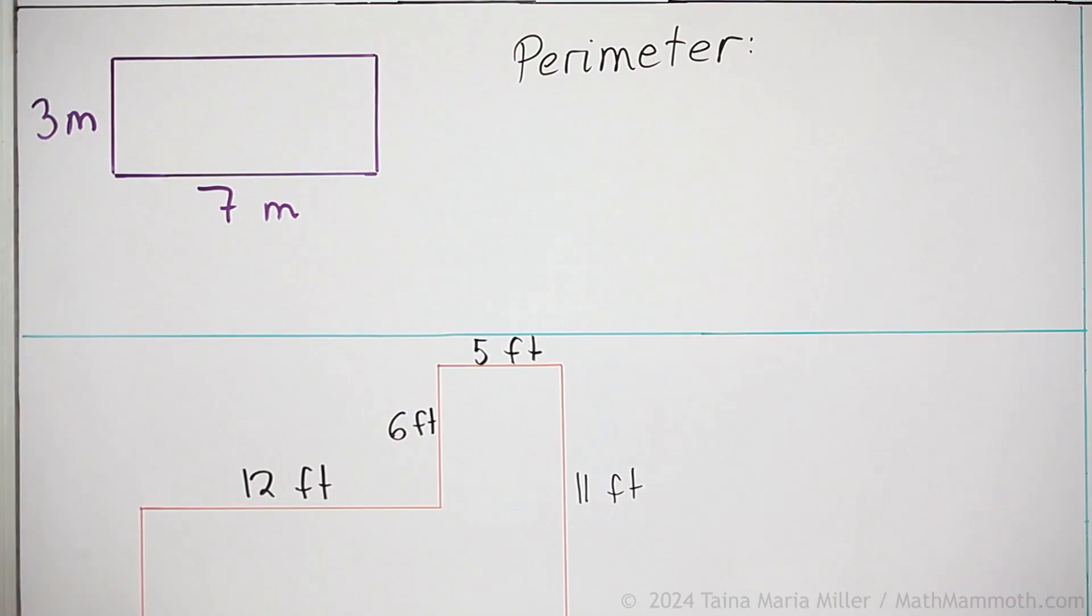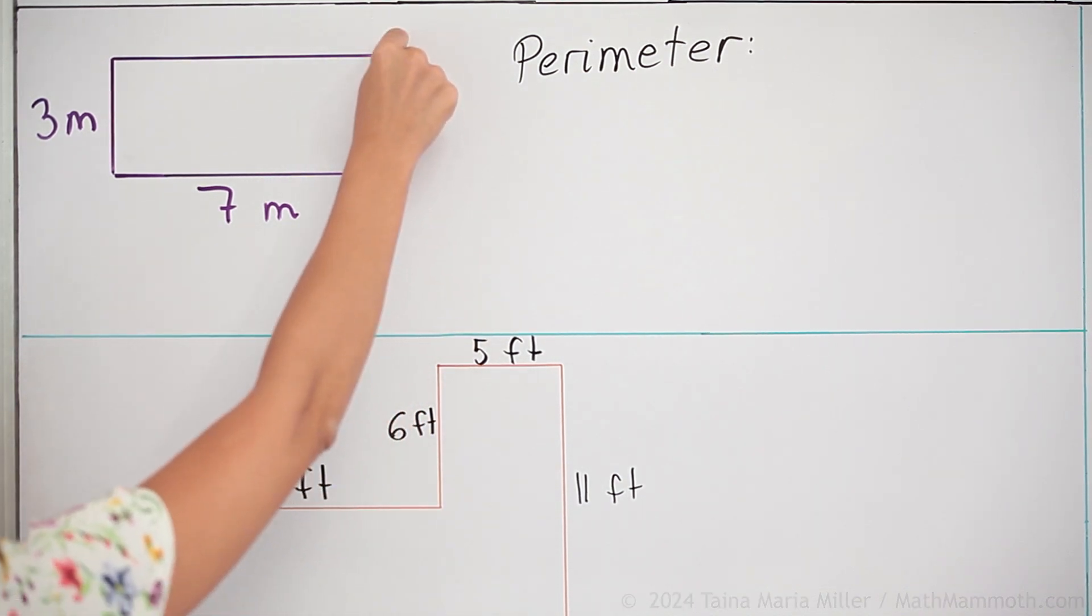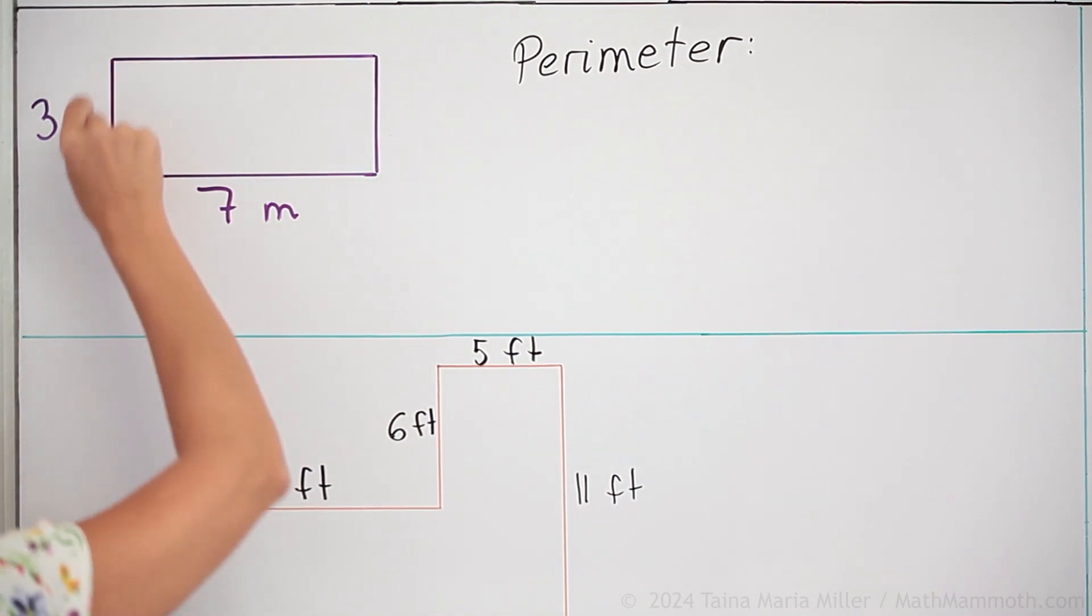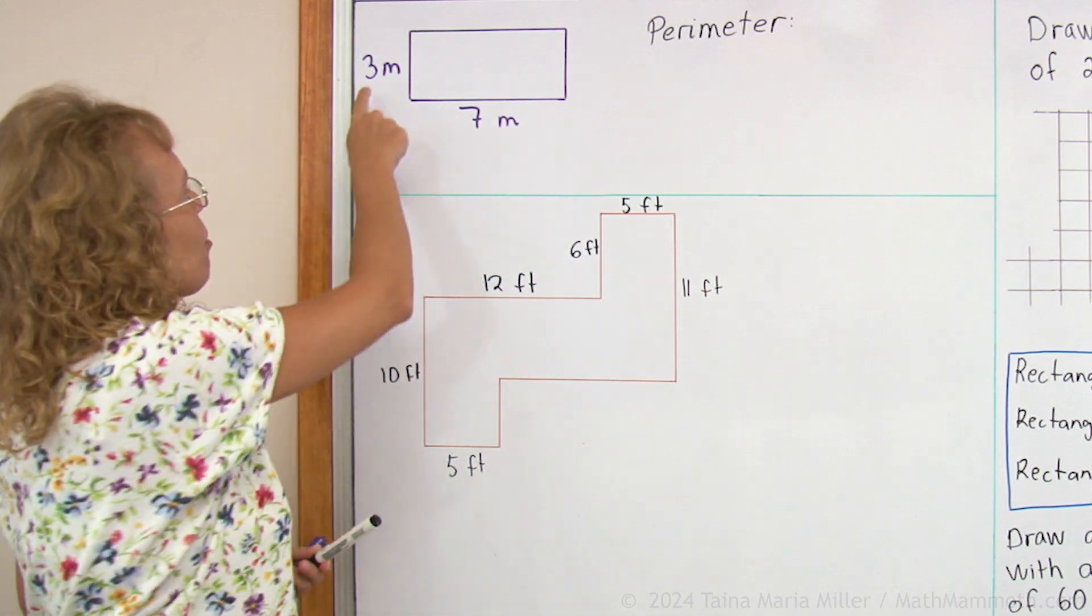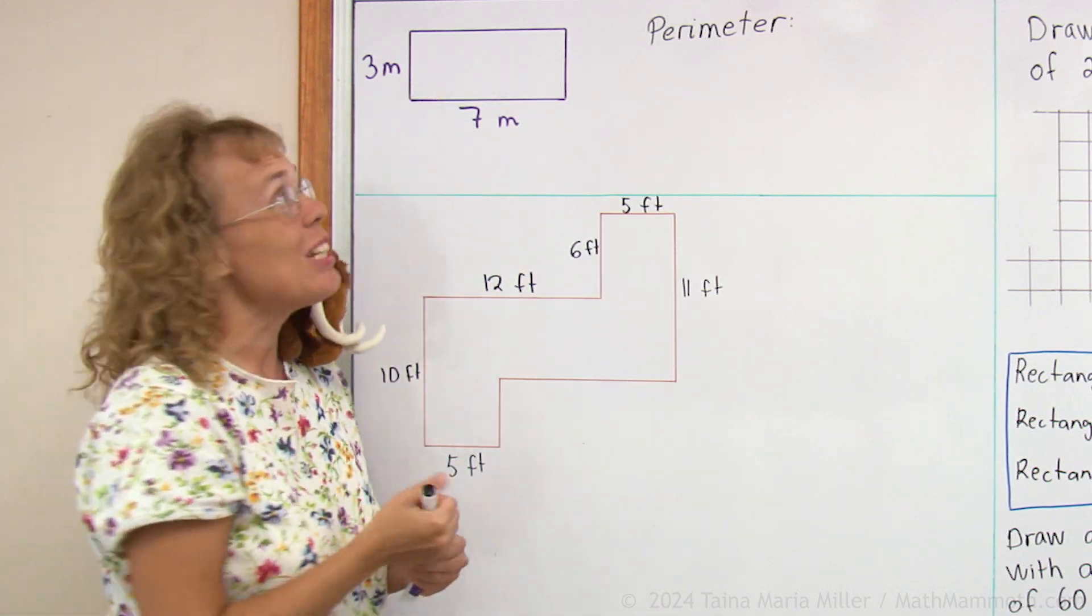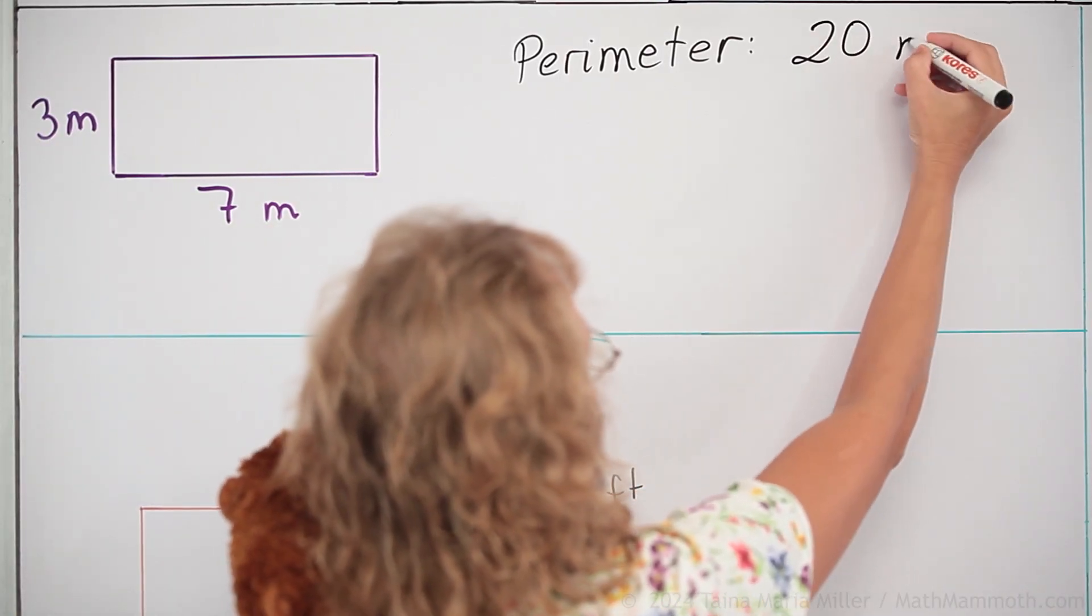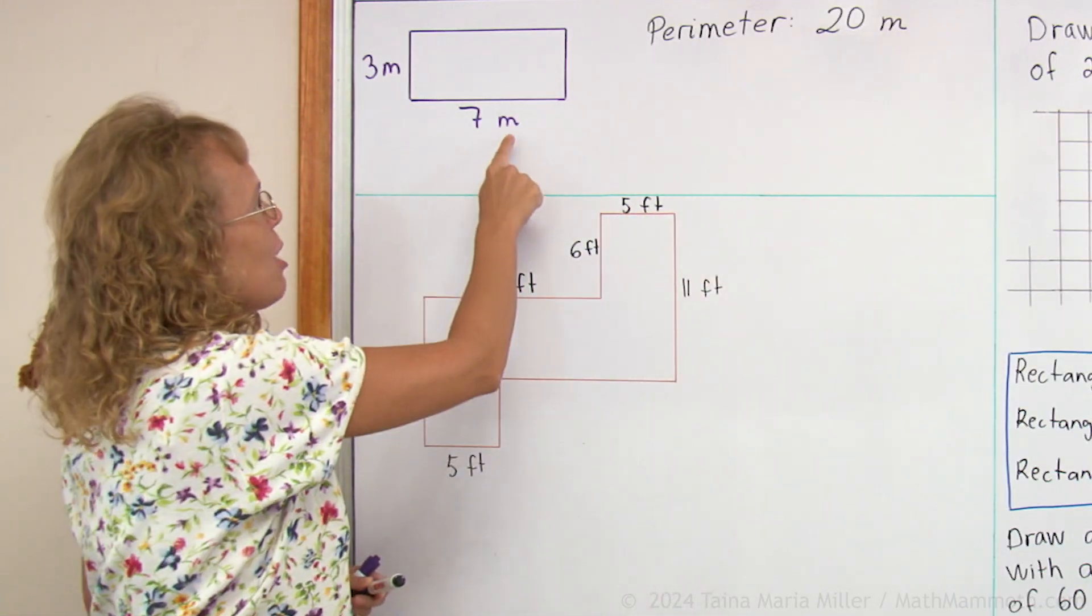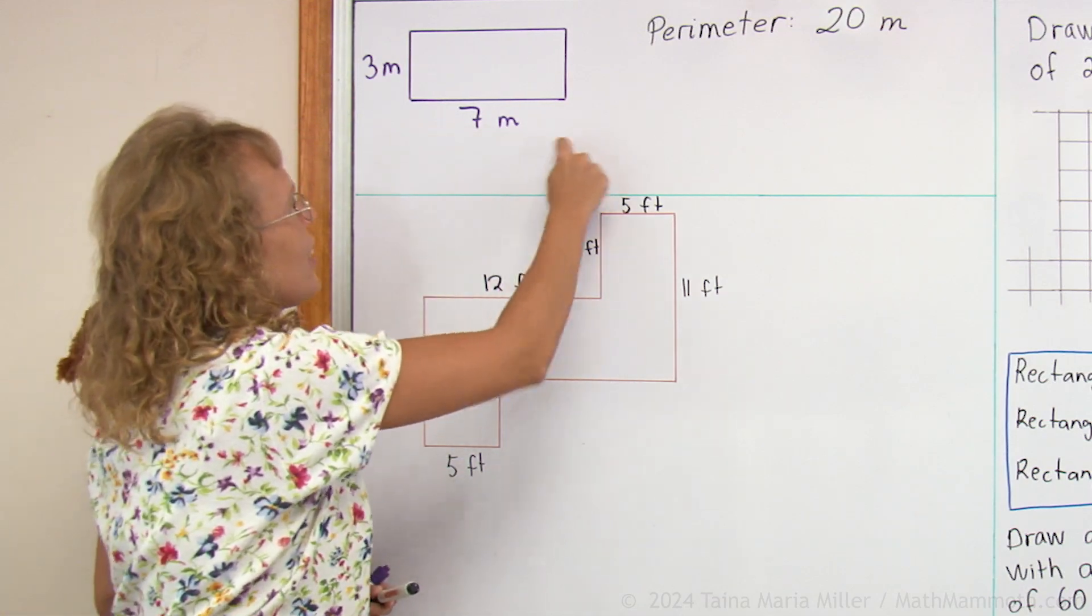So for this rectangle here, if you start here and you go 7 meters, you go this way 3 meters, you go this way 7 meters, this way 3 meters. So in total we have 10 and 10, 20 meters. Notice for perimeter our unit here is meters. It is the same as what I have here for the side length.